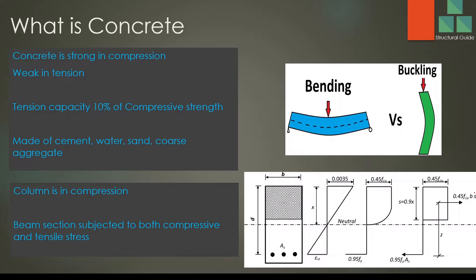If you take an element like a column, it has compressive stress because an axial load is applied, so the column is subject to compressive stress. When beams are connected to the columns, and when the spans are very large and the axial load is smaller, there may be bending stresses as well.